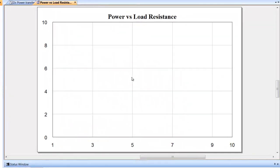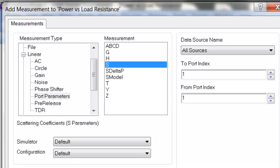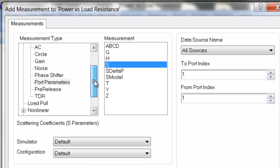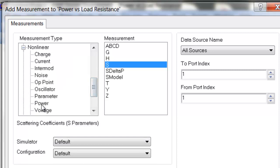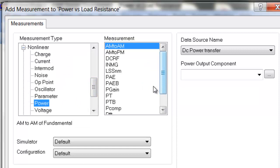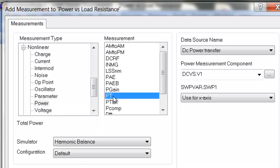And we can rename it power versus load resistance. We right click, add a new measurement. We select nonlinear measurements, power. And then we choose PT. So we're looking at the total power. And as a measurement component, we select the power meter.